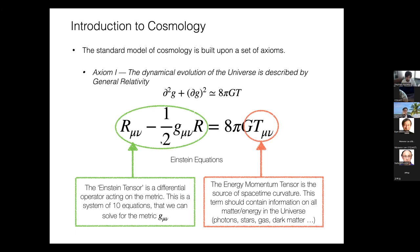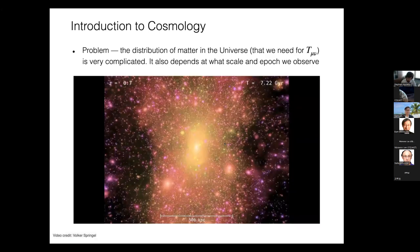This system of 10 equations can be decomposed into constraint equations and evolution equations. It's non-linear in the metric and all metric components are coupled, making it prohibitively difficult to solve in practice. The distribution of matter in the universe — the source of spacetime curvature — is itself very complicated, depending on both the scale at which you measure and the epoch. To illustrate this, I'll show a YouTube video of the galaxy distribution in the universe.